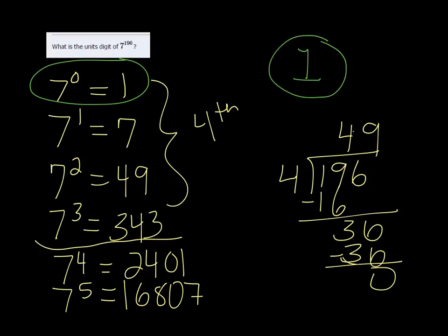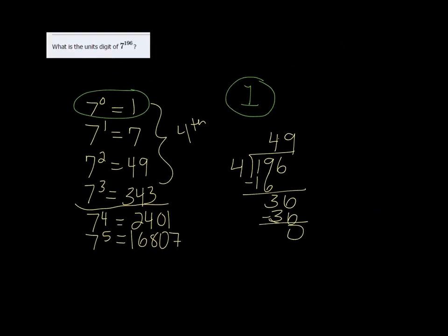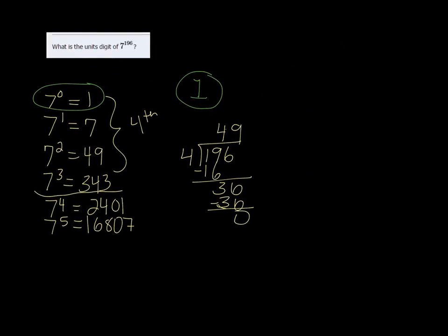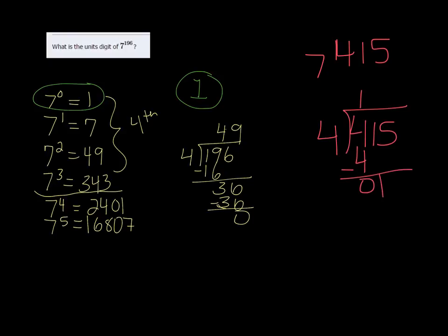We could look at another example. So suppose we wanted to know what 7 to the 415th power is. We already know it repeats every 4. So divide 415 by 4. 4 goes into itself once with a remainder of 0. Bring down the 1, 4 doesn't go into 1 at all.